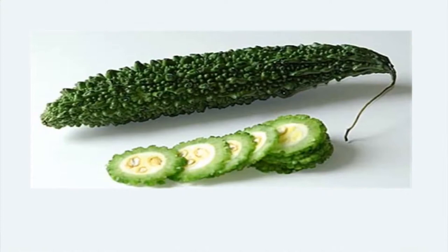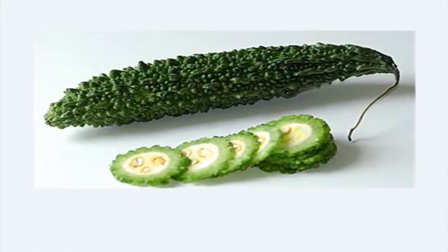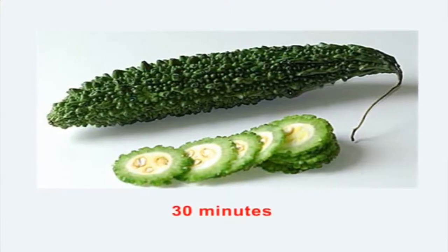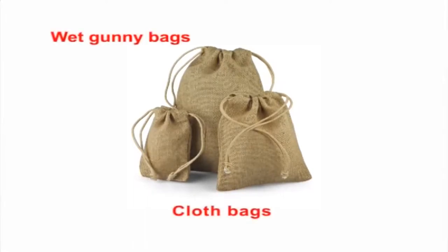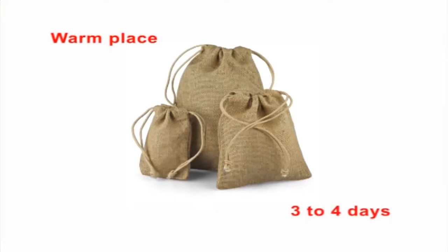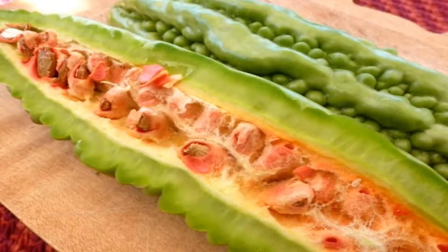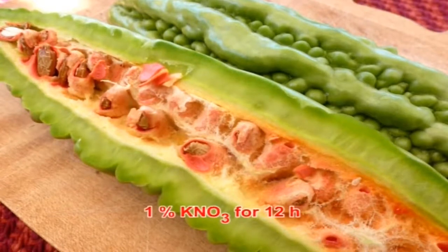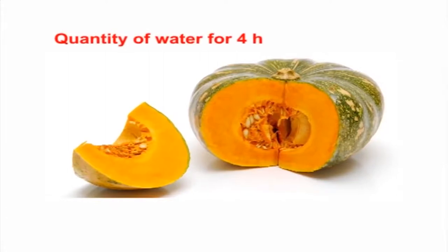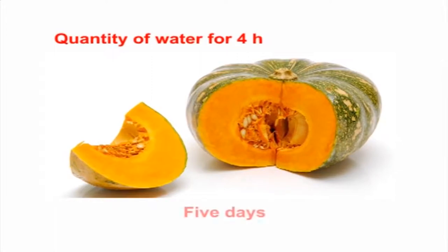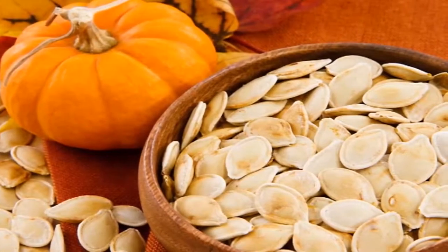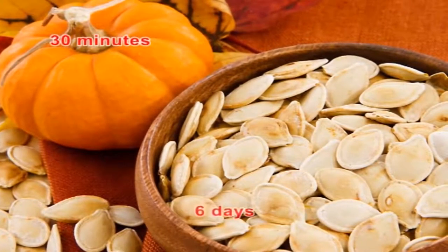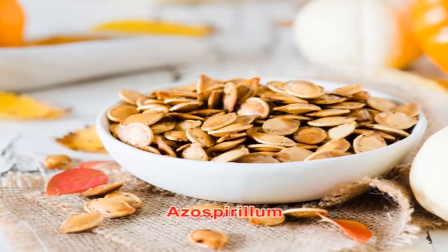In bitter gourd, the seeds have a very hard seed coat and germination is usually low, especially at low temperatures. So bitter gourd seeds have to be soaked in slightly warm water for 30 minutes, then kept in wet gunny bags or cloth bags in a warm place for 3 to 4 days, causing softening and rupturing of the seed coat. Or seeds may be soaked in 1% potassium nitrate solution for 12 hours. For pumpkin, seeds are soaked in double the quantity of water for 4 hours and incubated with moist cloth for 5 days, or treated with Azospirillum just before sowing.